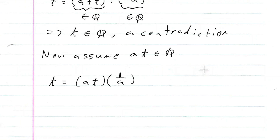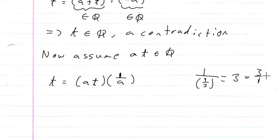For example, if A was one third, that's rational and not zero. And we know one over one third equals three over one, which is rational. So we know that one over A is rational when A is rational and not zero.